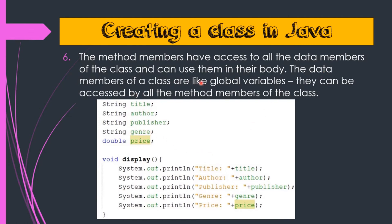The data members of a class are like global variables. As we discussed when covering the variables topic, there are local variables and global variables. These data members of a class act like global variables, meaning they can be accessed by all the method members of the class. There is no restriction that they will be accessed only by specific method members. Here we are having the method member display, and these data members are accessed by this method member display in its body.